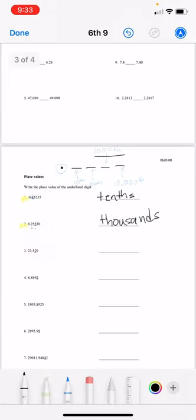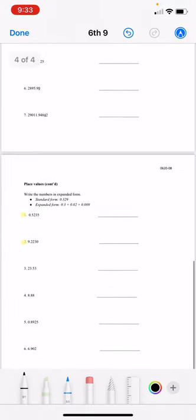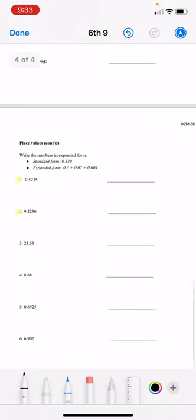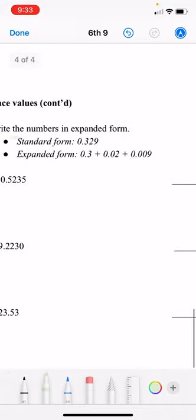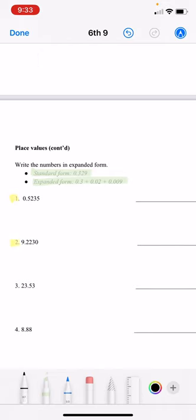Okay easy go ahead and finish the rest and then let's move on to oh again place values so this time we're gonna write the numbers in expanded form so the standard form looks like this and then the expanded form looks like this okay so we're given the standard form and let's expand it.